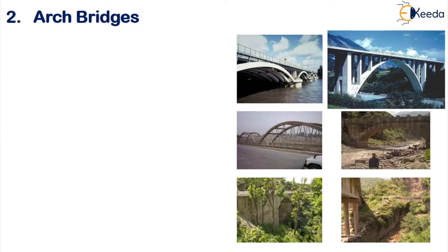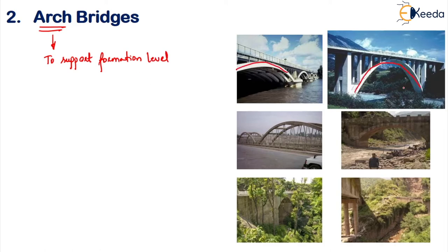The second type is the arch bridge. As the name indicates, an arch will be there to support your formation level. You can observe there is an arch here, an arch here, an arch here — all these come under the category of arch bridges where your formation level or road level is supported by the arch.